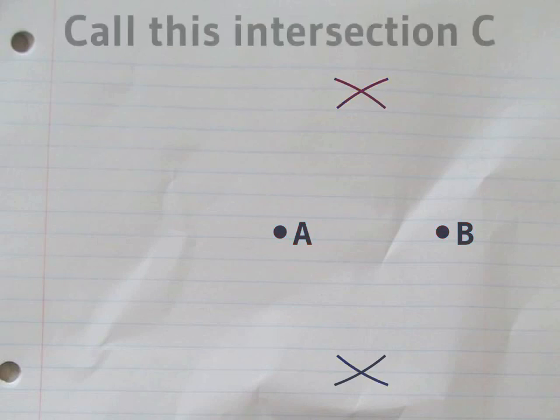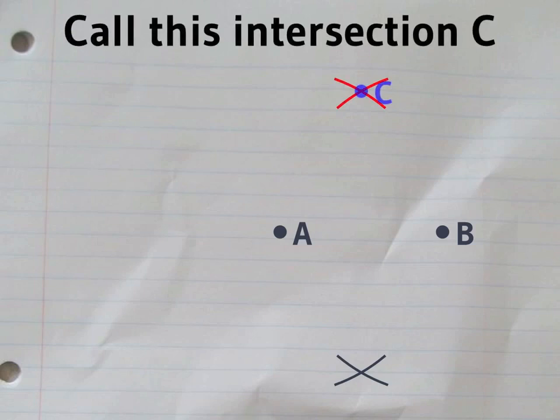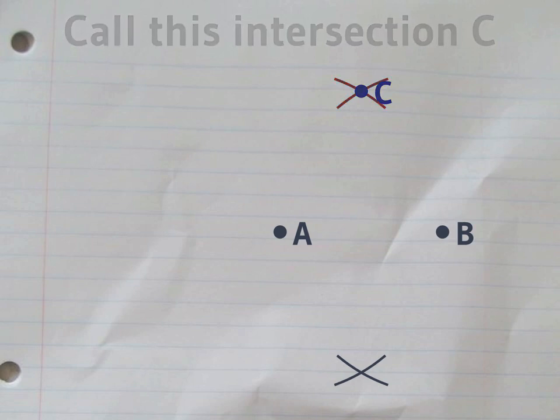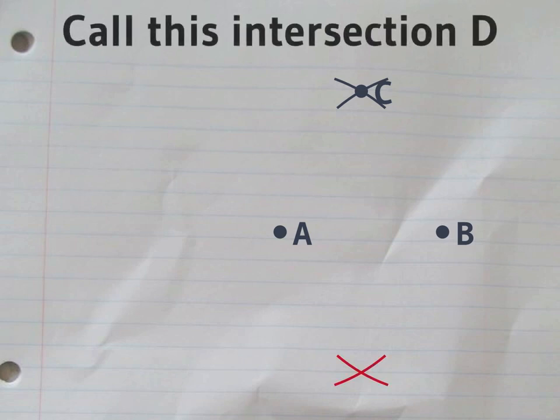We'll give names to these intersection points. Call this one C. And we'll call this one D.